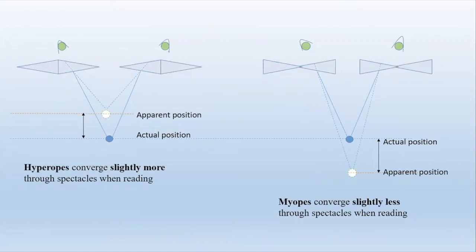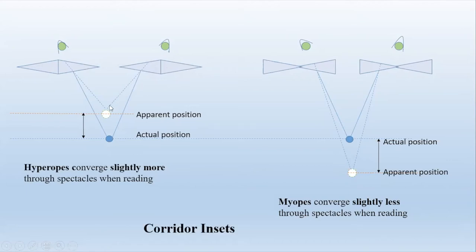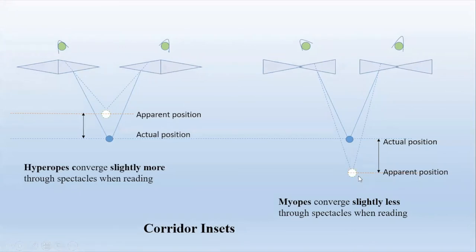For hyperopes wearing single vision lenses, when they look to read they converge much more. Light diverges from the object through the lens, creating a base-out effect that displaces the apparent object position closer. So when reading through plus lenses and looking off-center, convergence is slightly greater. With minus power lenses the opposite occurs — light bends toward the base, the image is displaced further away, and convergence is less.